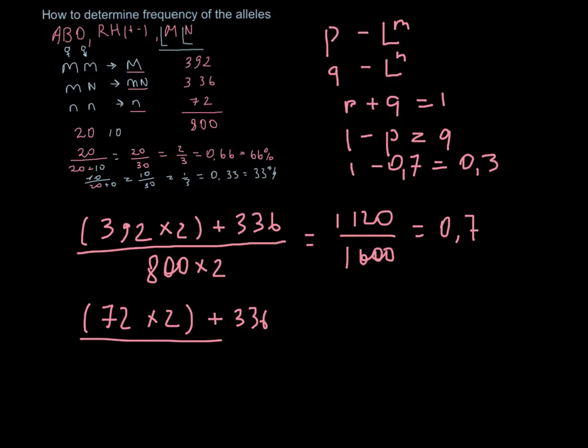And also divide by the total number multiplied by two of the alleles present. So we have 480 over 1600, and that is 0.3.